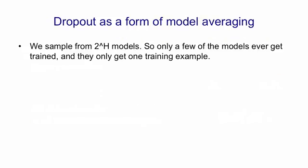So we can think of dropout as a form of model averaging. We sample from these 2 to the H models. Most of the models will never be sampled, and a model that is sampled only gets one training example.